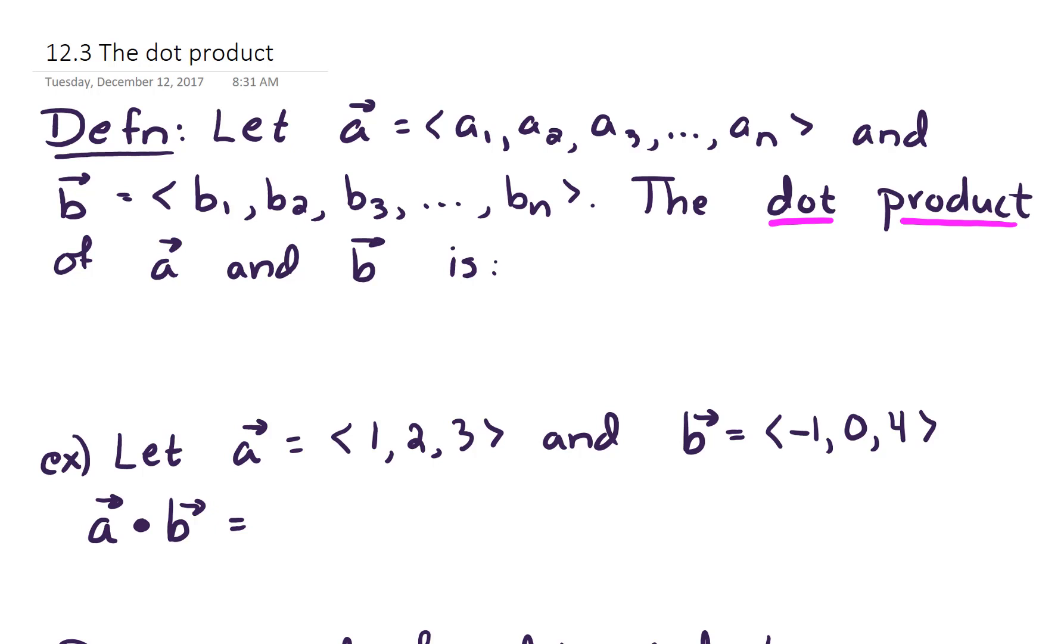Let vector a be equal to a vector with n components. We'll identify those as a sub 1, a sub 2, a sub 3, all the way up through a sub n.